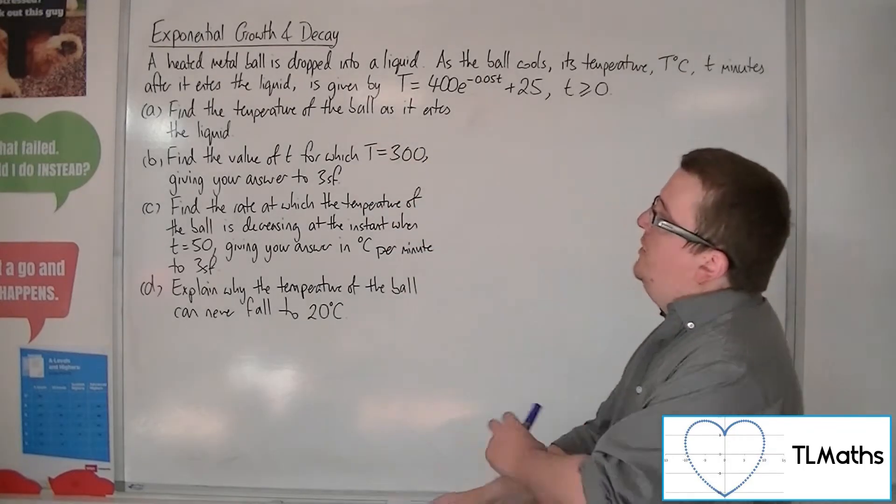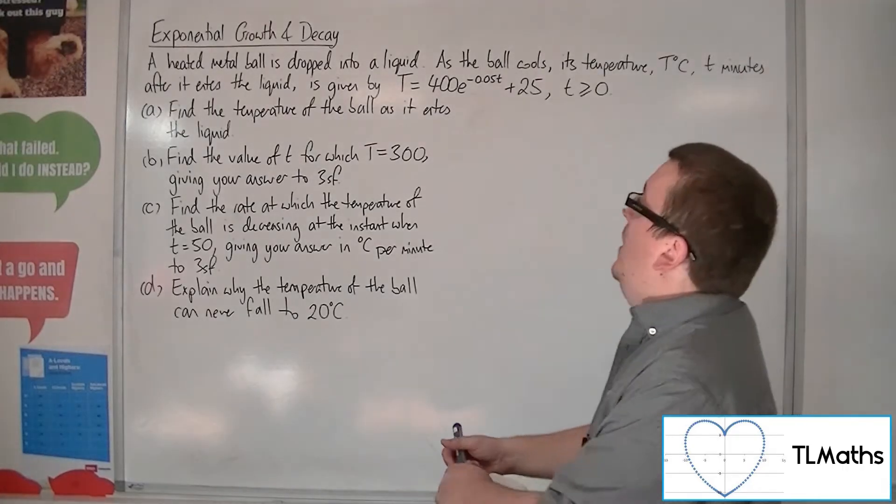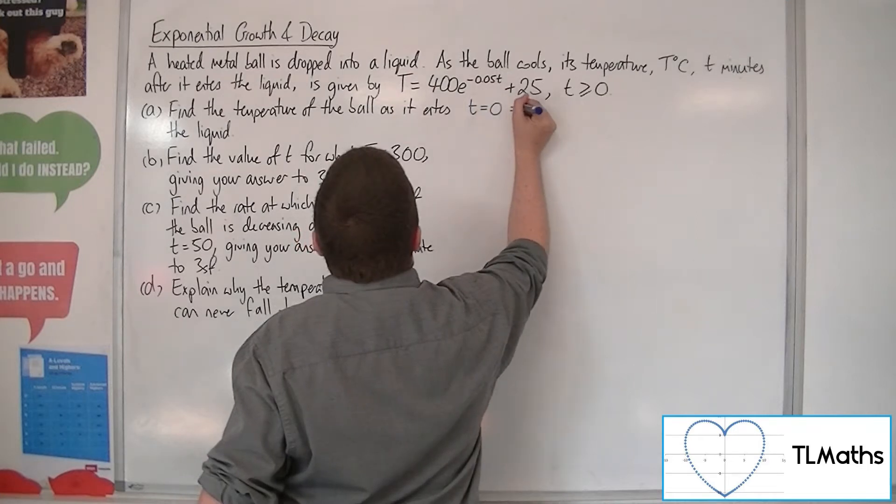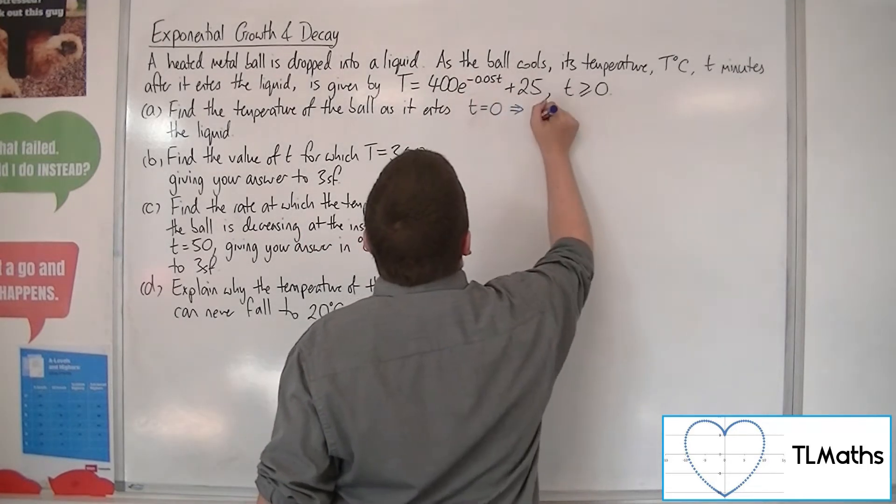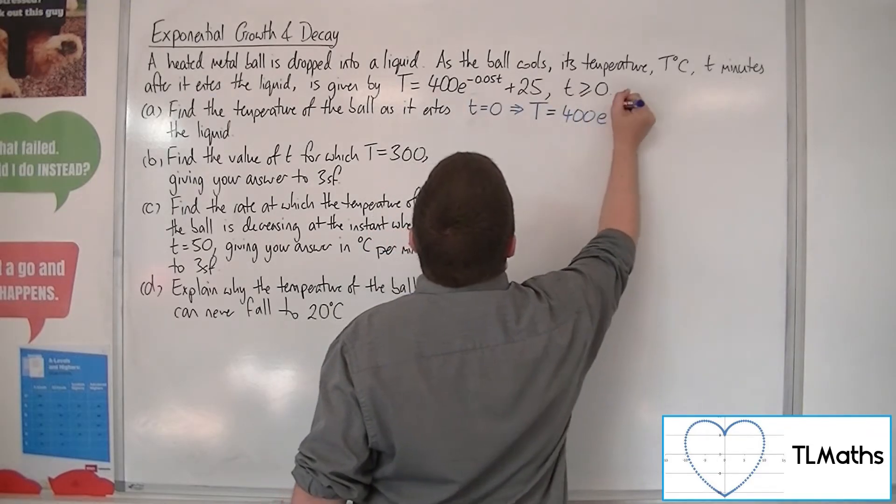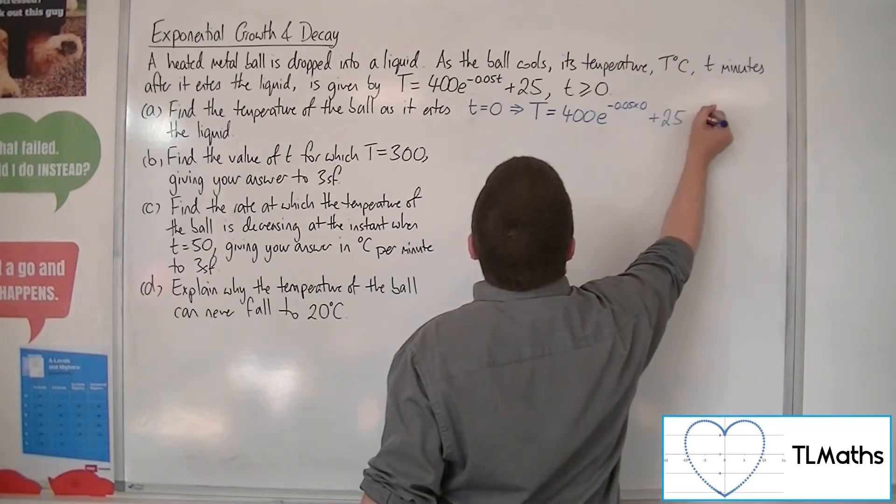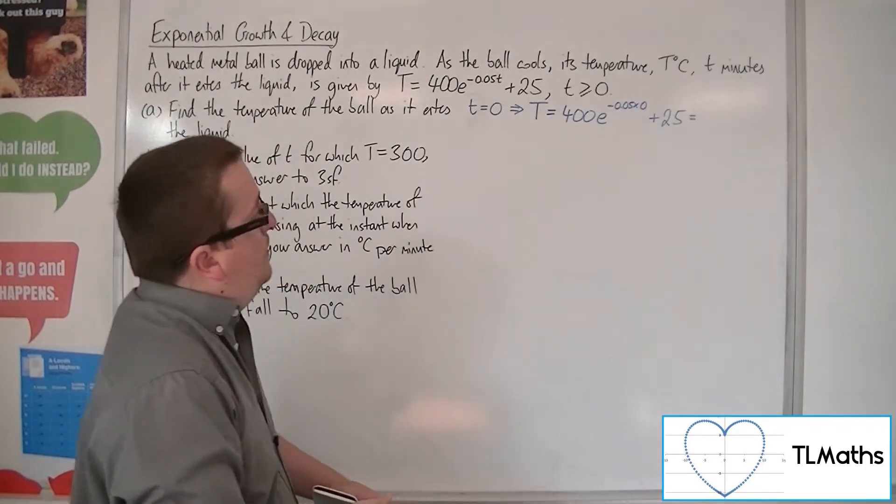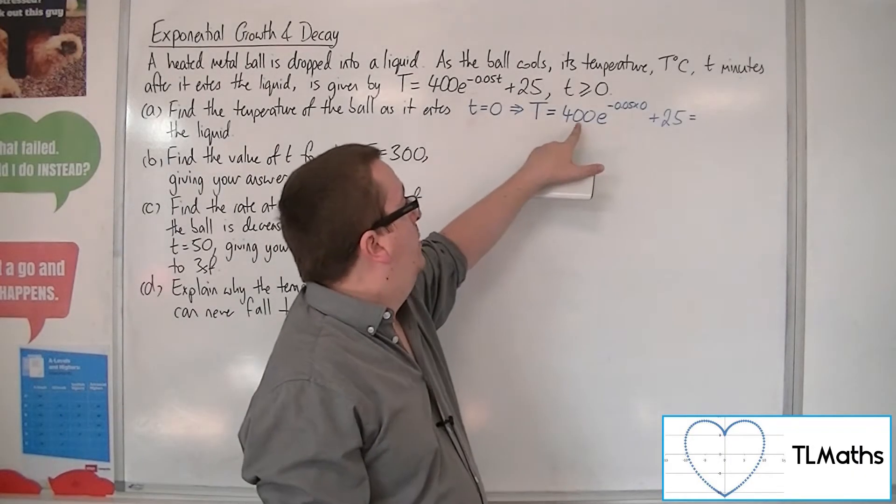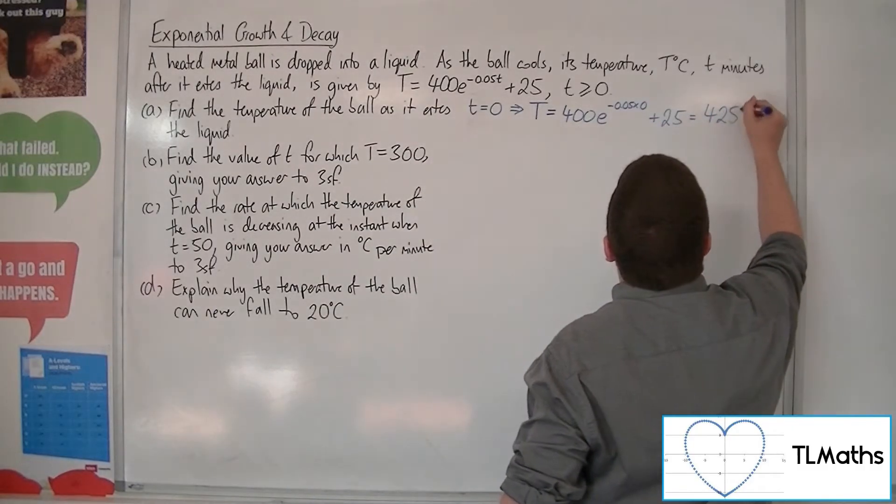Part A. Find the temperature of the ball as it enters the liquid. So that is initially, when lowercase t is 0. So substituting that into our equation, the temperature T is 400E to the minus 0.05 times 0 plus 25. Minus 0.05 times 0 is just 0. E to the 0 is just 1, so we have 400 plus 25, so 425 degrees centigrade.